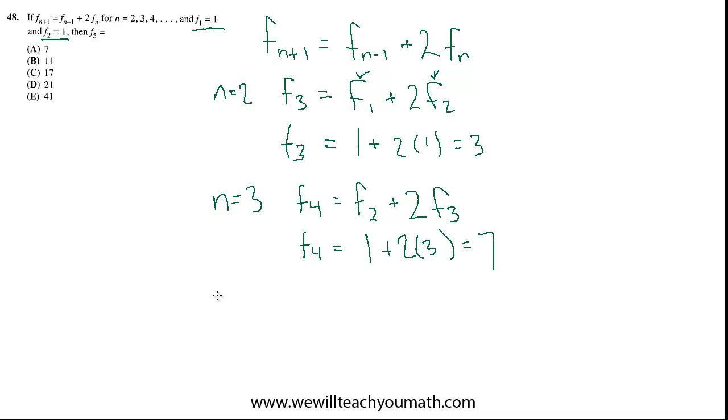And lastly, let's shortcut it a little bit for n equals 4. It's going to give us f5. It's two terms ago, which is f3, which was 3, plus 2 times the previous term, which is 7. So, 2 times 7 is 14, plus 3 is 17. Best choice is c.